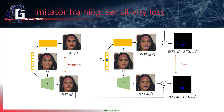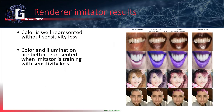Results show that accurately modeling the variation of all parameters is important. The first column gives the source images, the second column shows the standard imitator without sensitivity loss, and the third column gives the ground truth images obtained with the black box renderer. The first two rows show lipstick generation examples and the last two rows show hair coloration. Without the sensitivity loss, lipstick and hair color are well represented but illumination is not. With the sensitivity loss, both color and illumination are well represented.